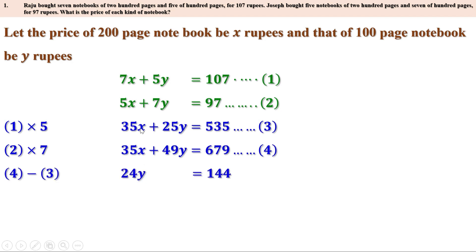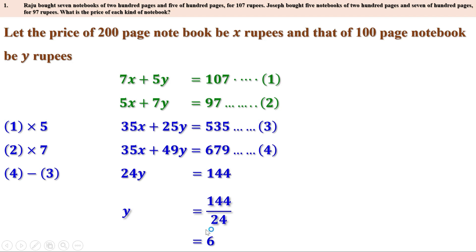35X minus 35X is 0. 49Y minus 25Y is 24Y. 679 minus 535 is 144. So we get 24Y equal to 144. Therefore Y equal to 144 divided by 24, which equals 6. So Y equal to 6.